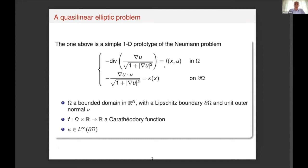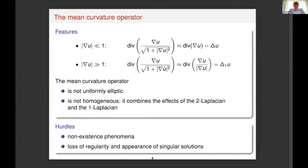Standard assumptions are made upon f and kappa. Taking a closer look at the mean curvature operator: when the gradient of u is small, the square of the norm of the gradient is negligible with respect to 1, so the curvature operator behaves as the 2-Laplacian. On the contrary, when the gradient of u is large, it is the constant 1 that is negligible, and so the curvature operator behaves as the 1-Laplace operator. Thus the mean curvature operator is not uniformly elliptic, not homogeneous, and interpolates the 2-Laplacian and the 1-Laplacian between 0 and infinity.